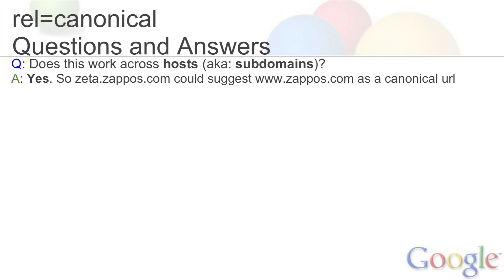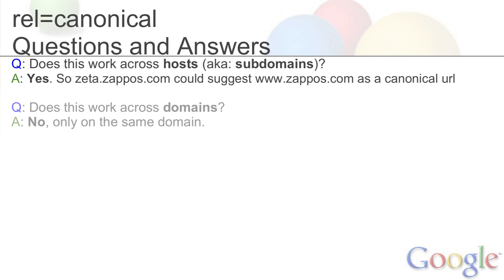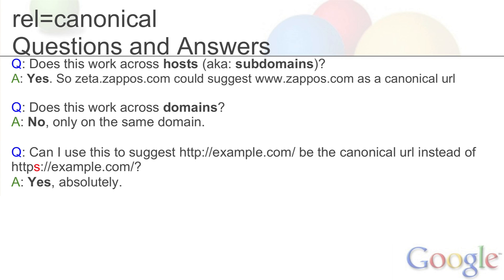So let's go through a couple of questions and answers. How does rel equals canonical work and what are the rules for using it? The rule is that you can assign a canonical from one URL to another URL as long as it's on the exact same domain. This works across subdomains — for example, zeta.zappos.com could point over to www.zappos.com. But it doesn't work across domains, so zeta.zappos.com couldn't redirect over to google.com with rel equals canonical. You can use it for protocols like HTTP versus HTTPS, and you can use it for ports as well.